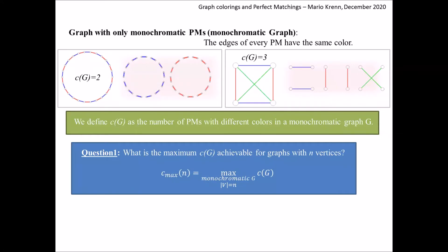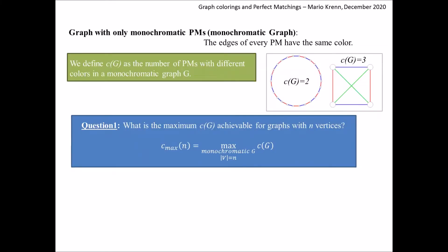This leads to a natural and interesting question: what is the maximum C achievable for graphs with n vertices? That means, take every monochromatic graph with n vertices — what is the maximum C you can get? For the complete graph of four vertices, if you want to add another perfect matching with a different color you need to add more edges. But this is already a complete graph. Therefore, adding new edges leads to multi-edges with different colors, which lead to non-monochromatic perfect matchings — so the maximum number of colors for four-vertex graphs is three.